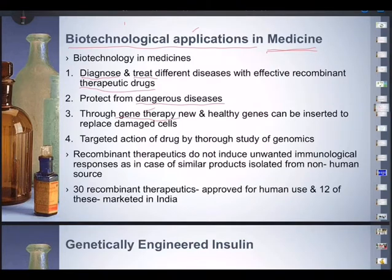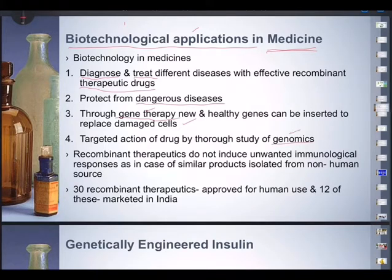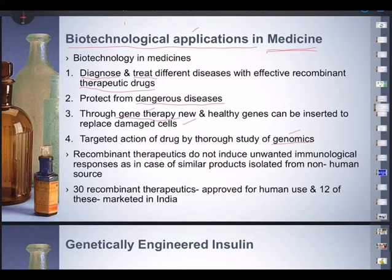Through gene therapy, new and healthy genes can be inserted to replace damaged cells. The targeted action of drugs is achieved by the study of genomics, so we study exactly what the problem is in human physiology and biochemistry. Recombinant therapeutics do not induce unwanted immunological responses, as in the case of similar products isolated from non-human sources.